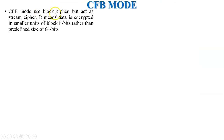CFB mode uses a block cipher but acts as a stream cipher. It means data is encrypted in smaller units of 8 bits rather than the predefined size of 64 bits. In other modes we have already discussed, a fixed block of 64 bits is used, but here only 8 bits of the block is used to generate cipher text.